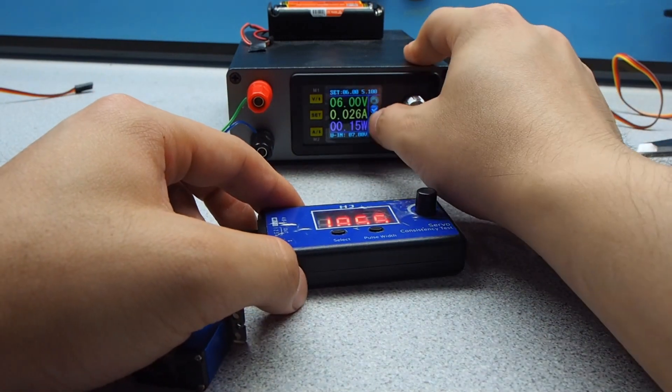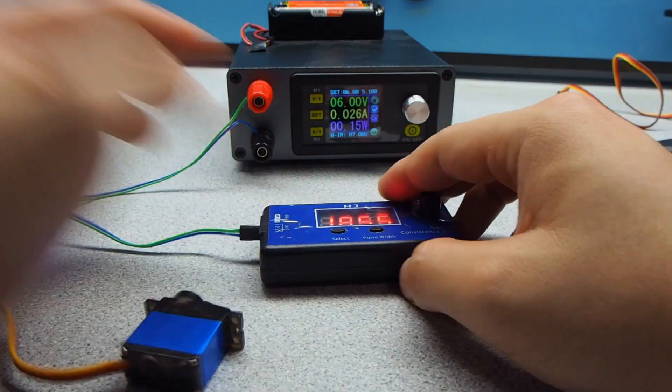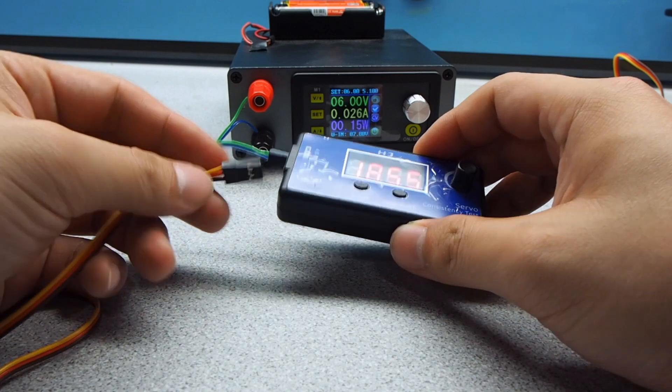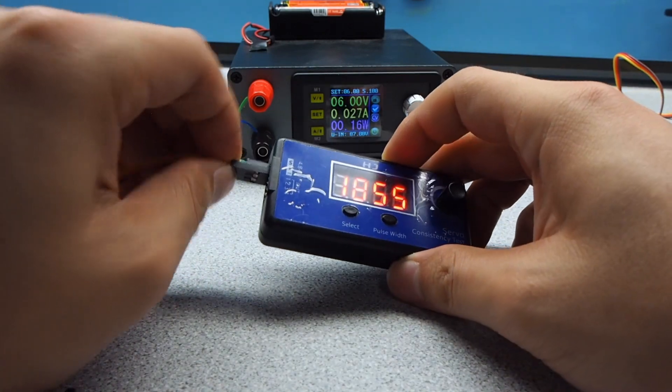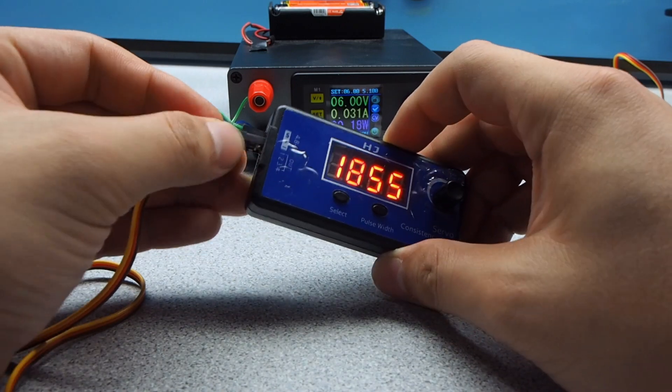Note that when there's no servo connected, it's already drawing 26 mA from the power supply. So this should be considered after you connect your servo to the signal generator and want to measure the servo's idle currents.